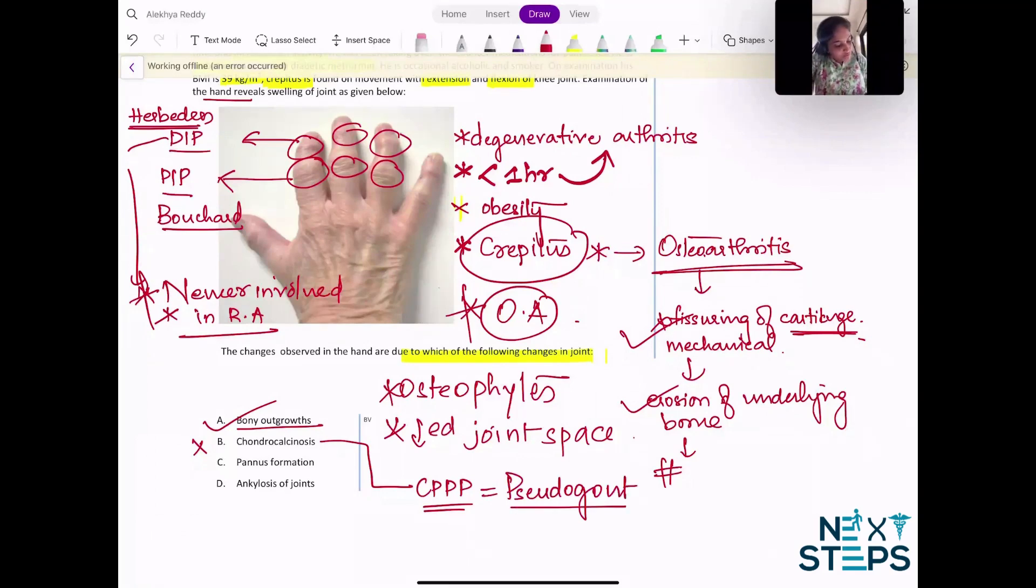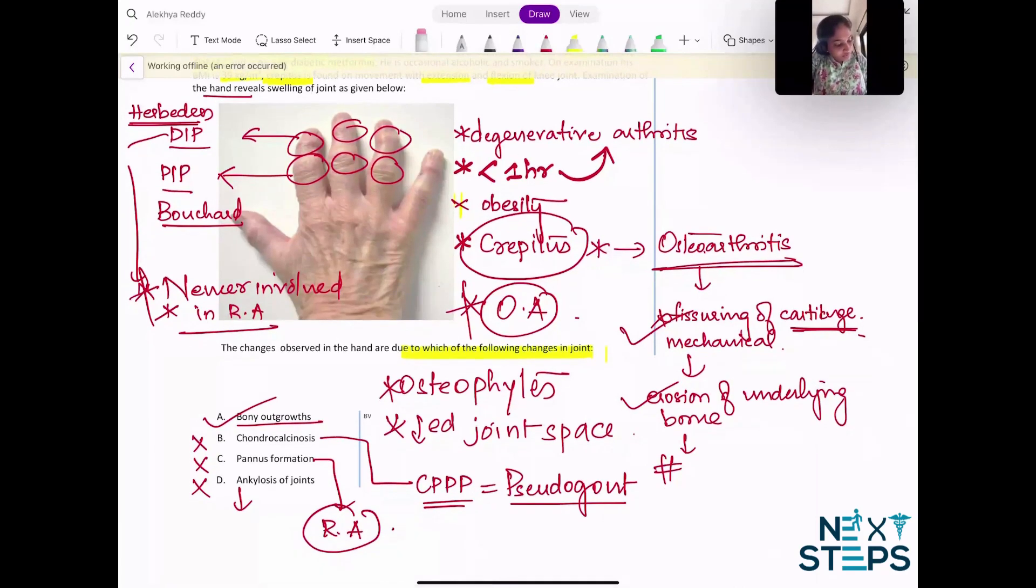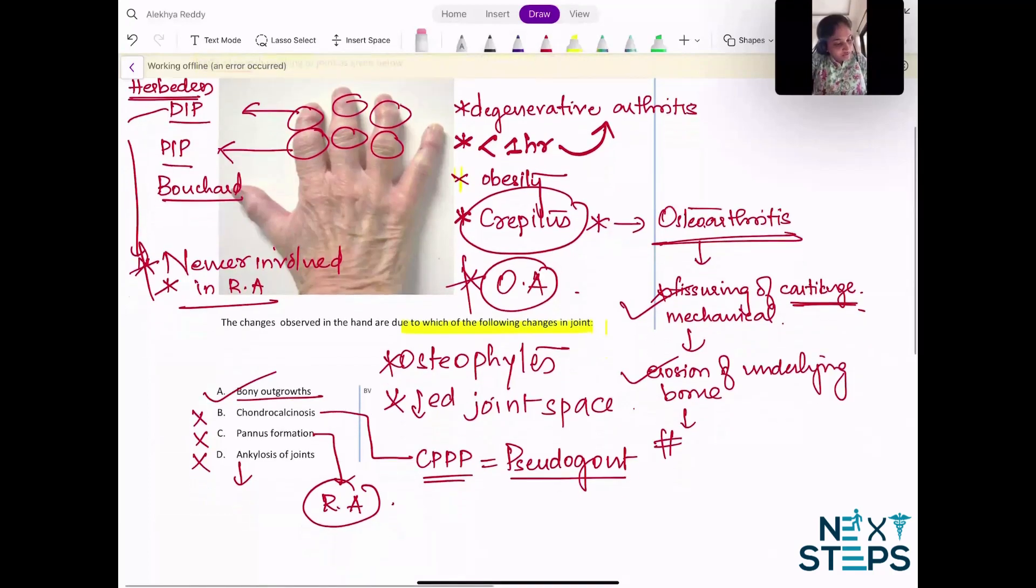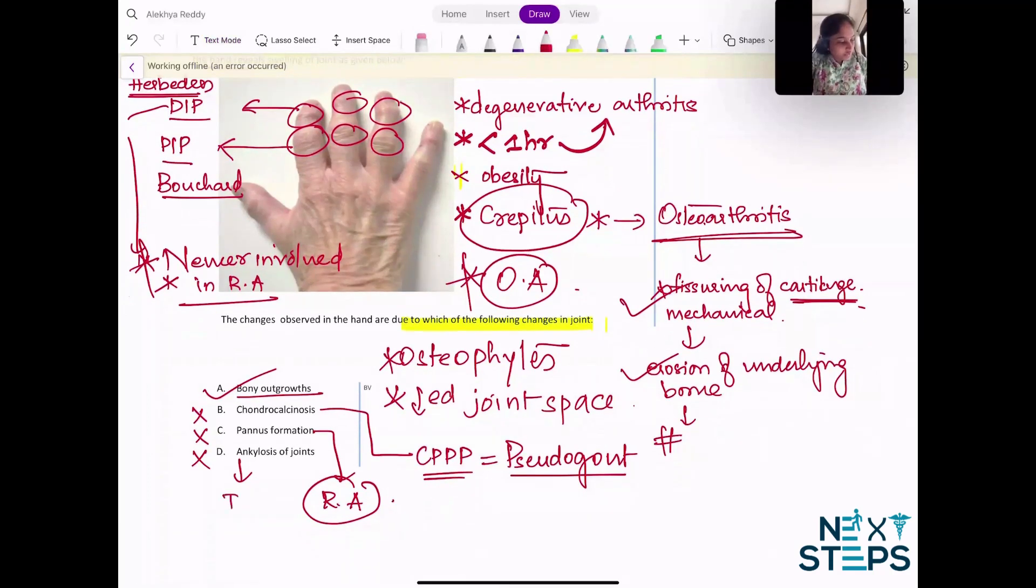These crystals go and deposit in the articular cartilage, resulting in calcification and that's how inflammation is generated - pseudogout. Pannus formation is characteristic of rheumatoid arthritis. Ankylosis of joints is seen in inflammatory arthritis, mostly ankylosing spondylitis. So the right answer is bony outgrowths, which are nothing but osteophytes.